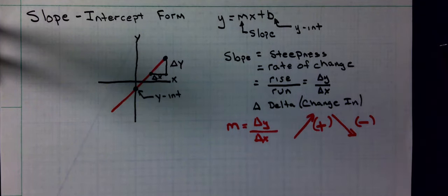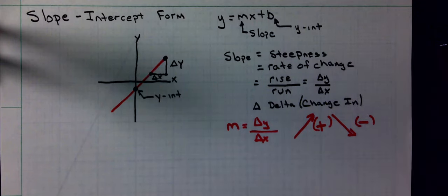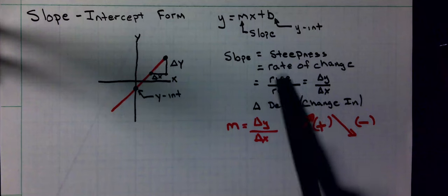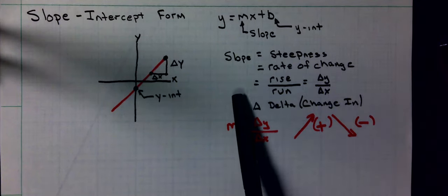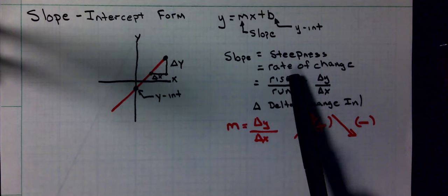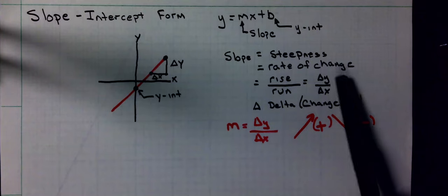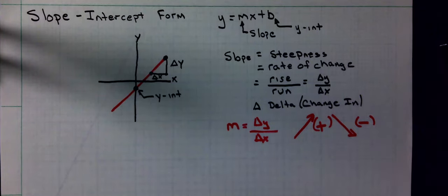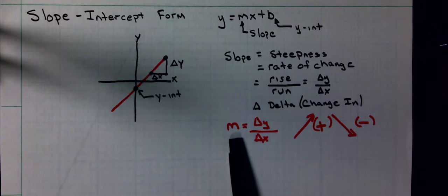Again, from last year, the slope of the line gives us steepness. We also called it the rate of change of the graph. The slope of a non-vertical line is equal to the line's rise over its run. We write it as delta y over delta x. That triangle, that Greek letter delta, means change in slope.